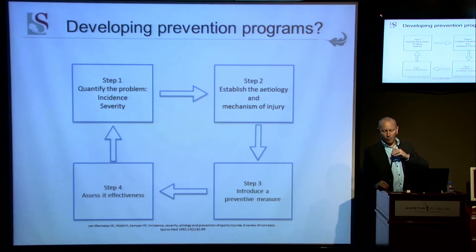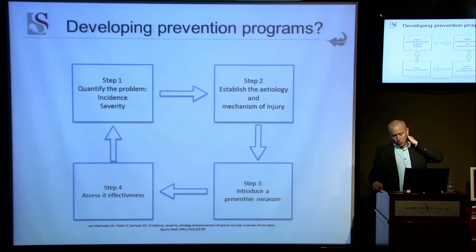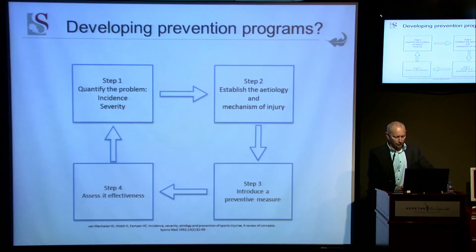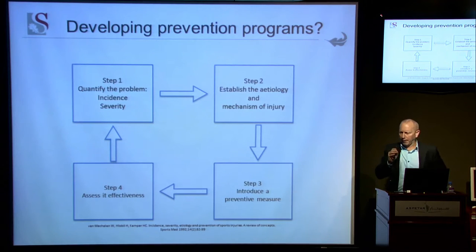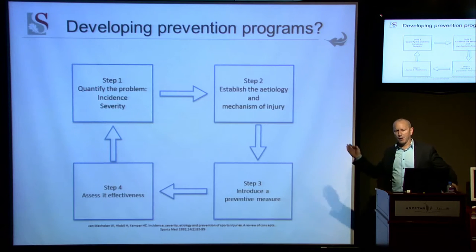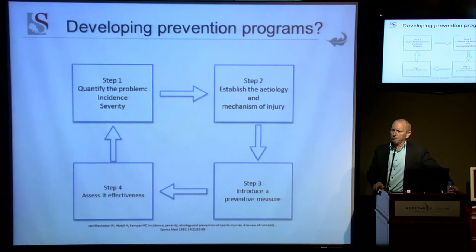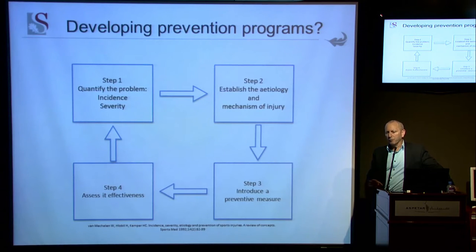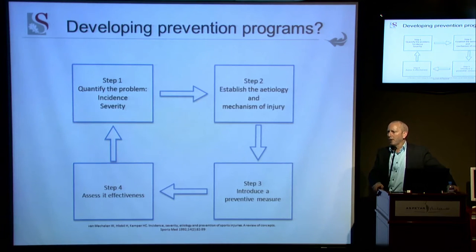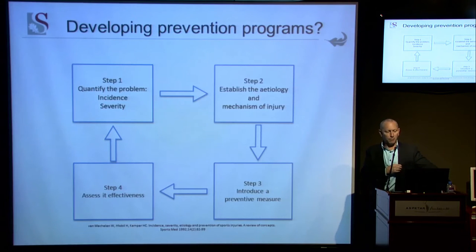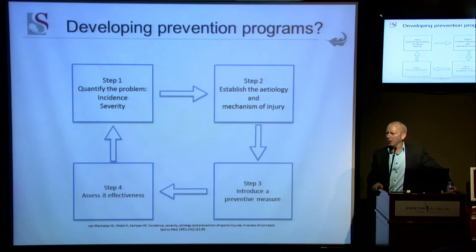I'm going to build on Nick's talk on injury and show you some of the work that we've been doing in a study that many of you have been involved in. The best way to introduce this is with a slide known to all in sports medicine and exercise science: Willem van Mechelen's model of developing prevention programs. Peter noted today that the Paralympic movement is very young, and therefore we are very young in this four-step procedure important for developing prevention programs.